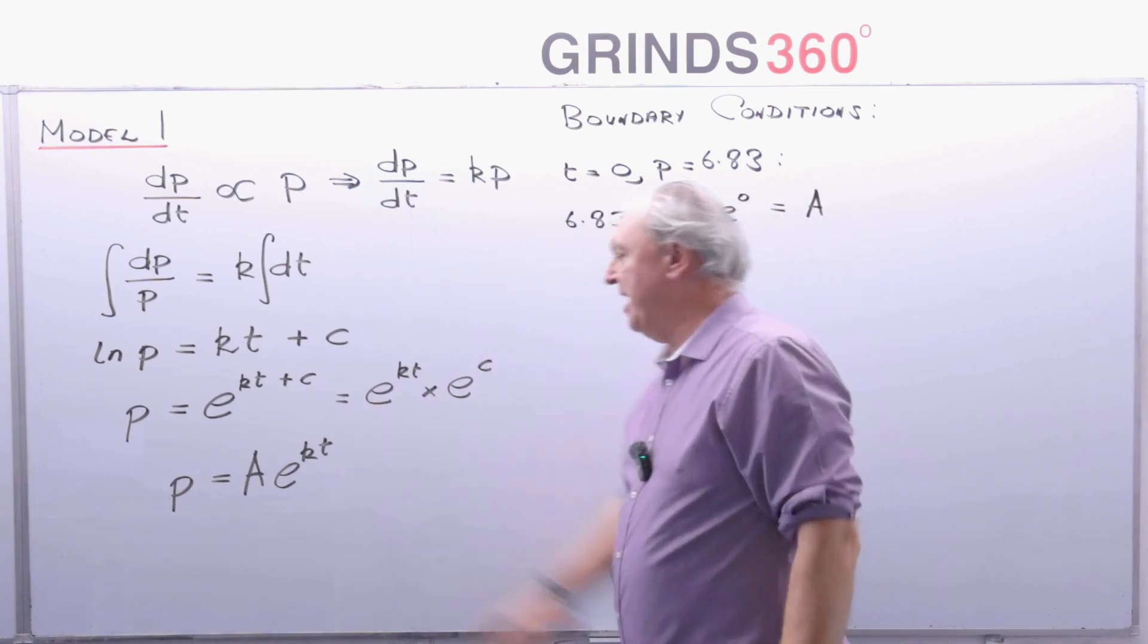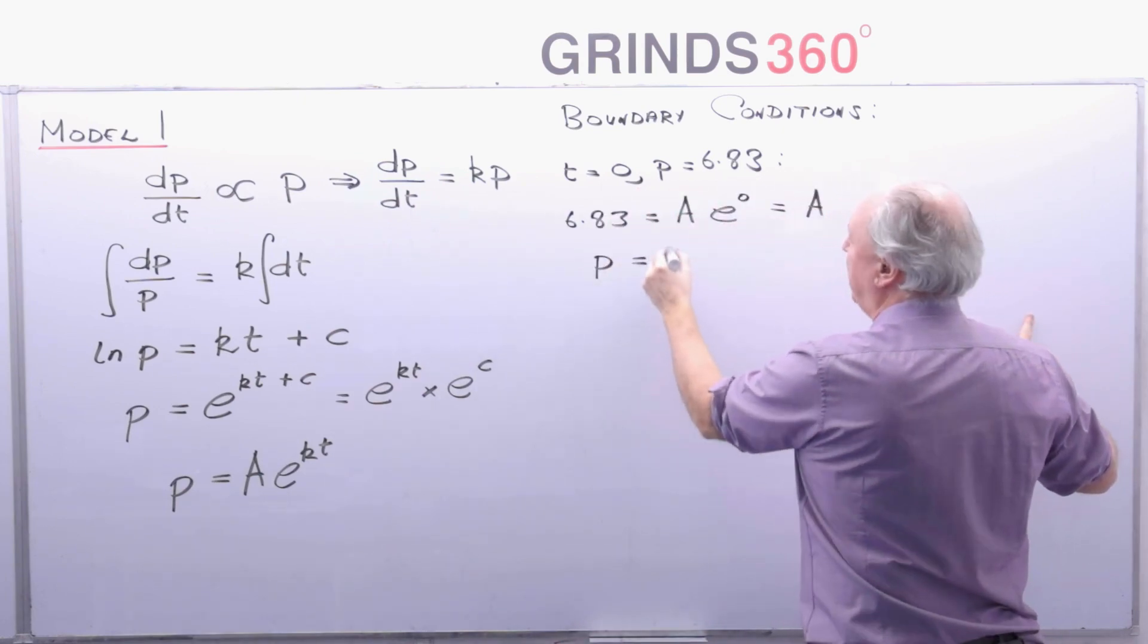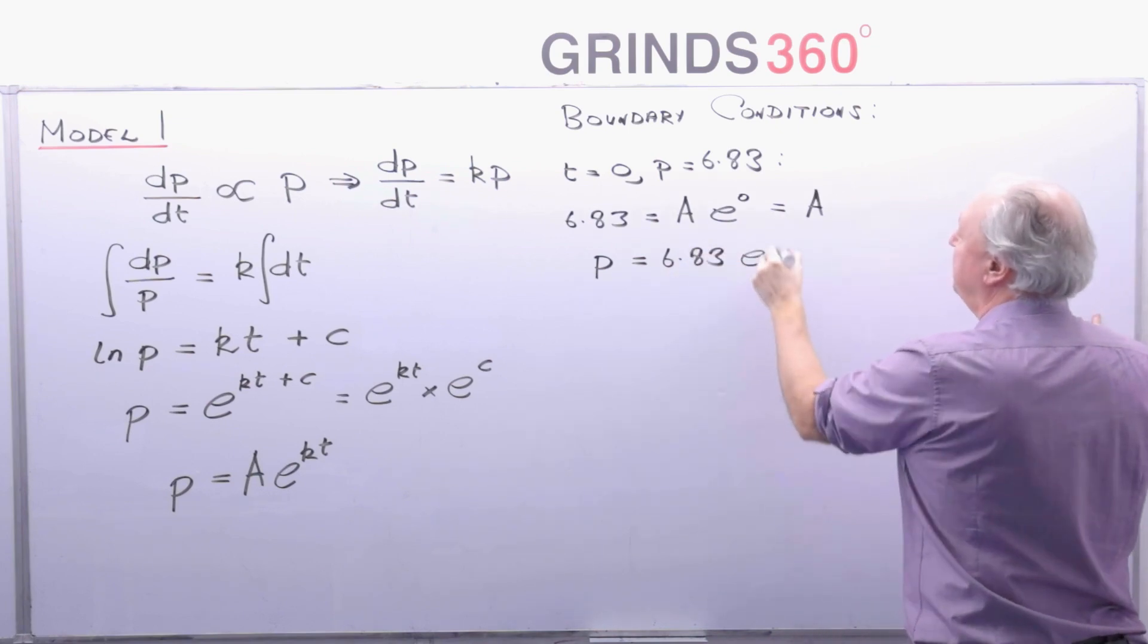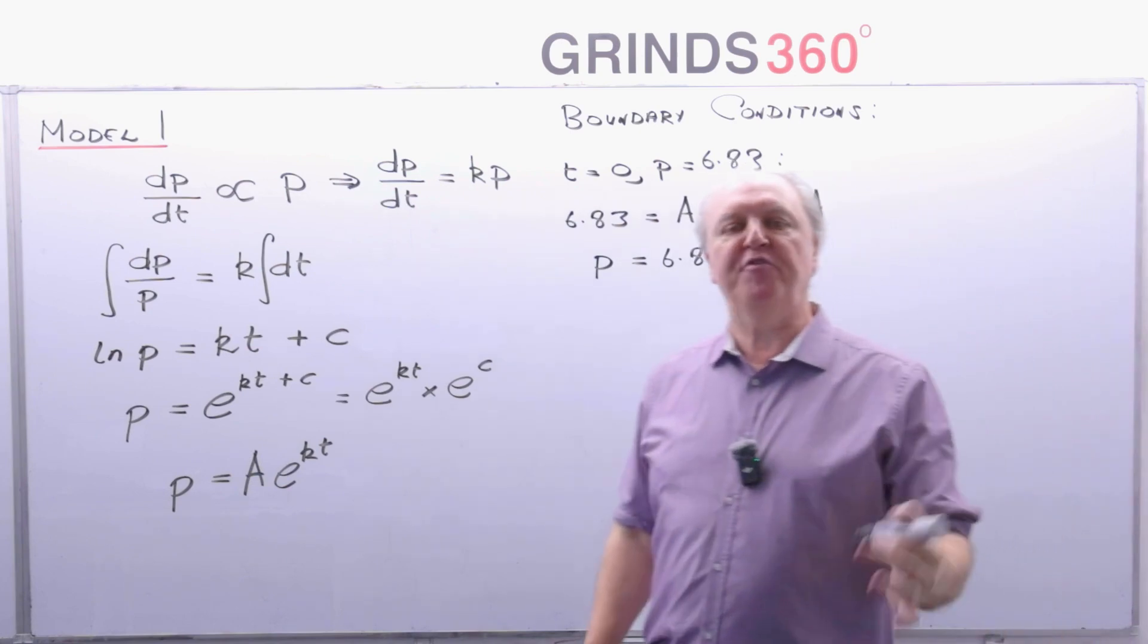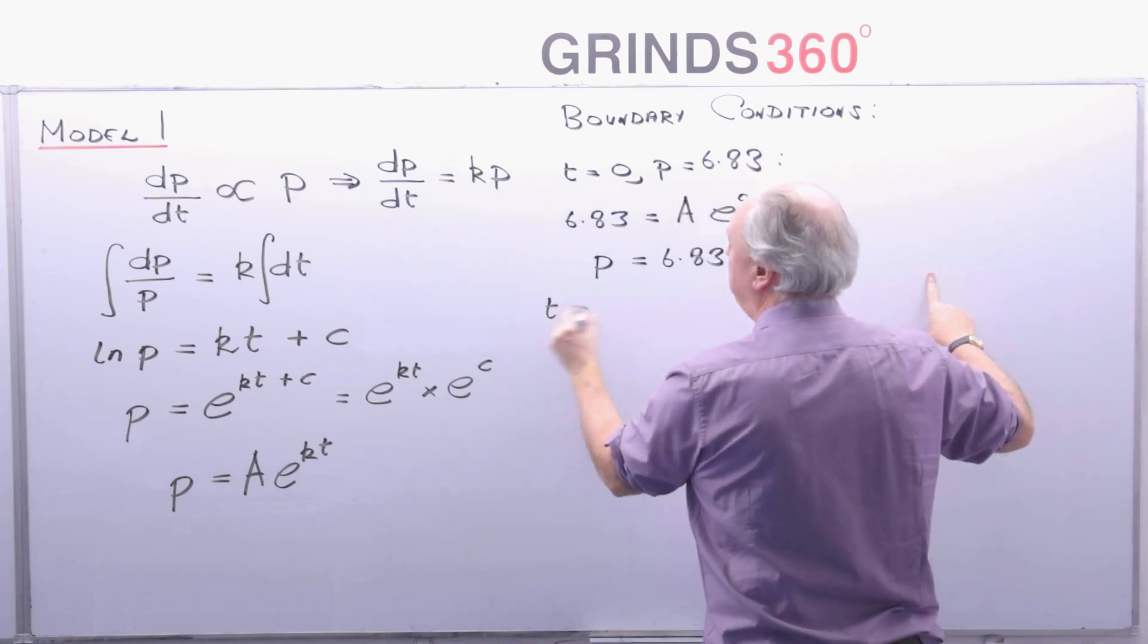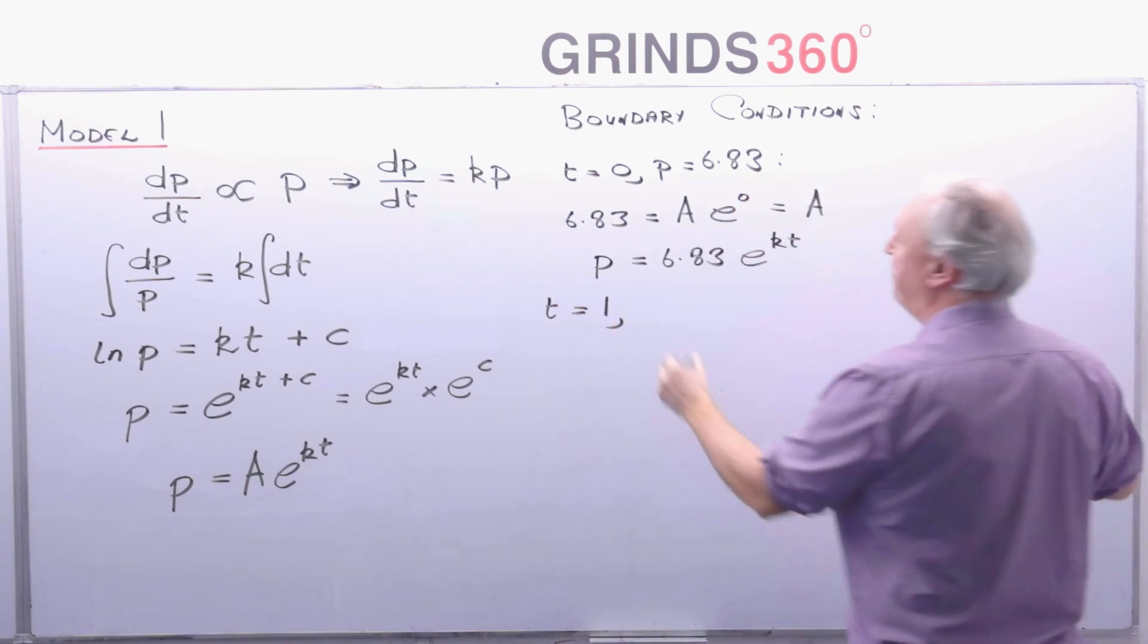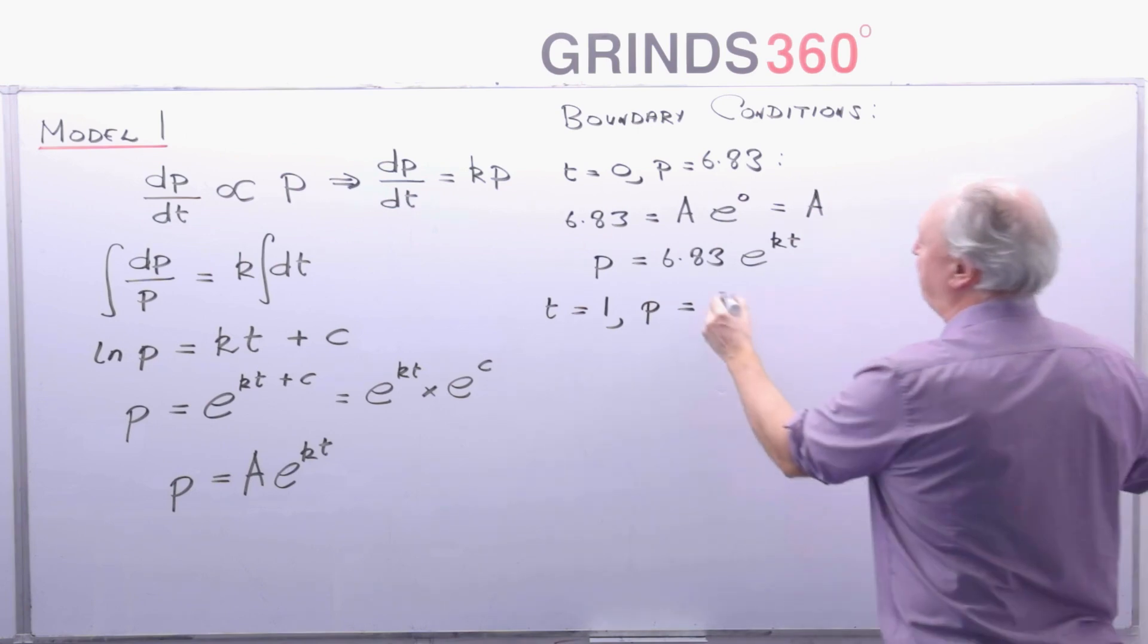Well let me now fill that in to my solution. So p is equal to 6.83 e to the power of kt. So now I'm going to use my next bit of information to find the value of k. So when t is equal to one, which is in the year 2020, we said the population p is 7.89 billion.